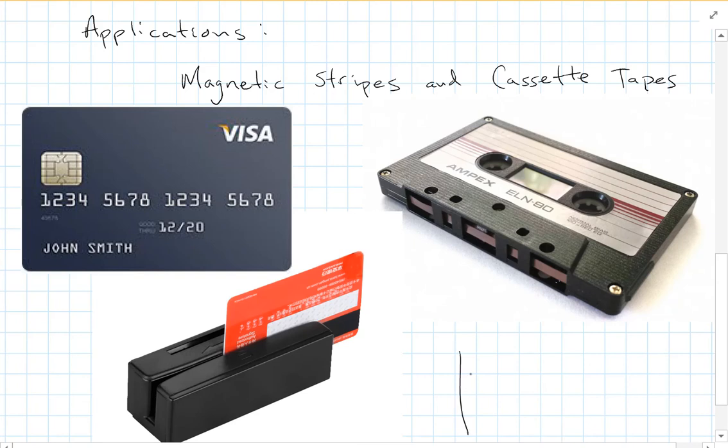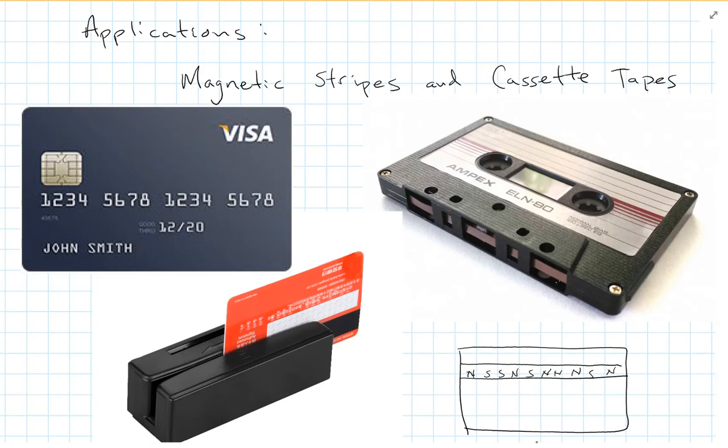So the magnetic stripe on the back of that card has a series of north and south poles. And a north pole up might be a one and a south pole up might be a zero. Remember, it's storing information in binary ones and zeros. So you can create a number by having lots of little magnetic poles. And you have to scan that. The reader has a little pickup coil in it. As you scan your card across the pickup coil, the magnetic fields change up, down, down, up. And the EMF that's generated in the loop can detect whether it's a one or a zero, whether it's a north up or a south up.